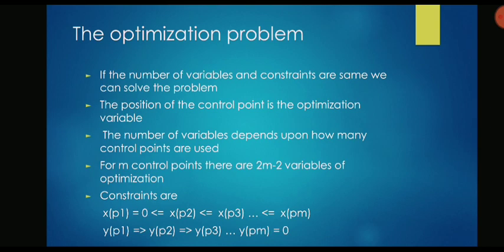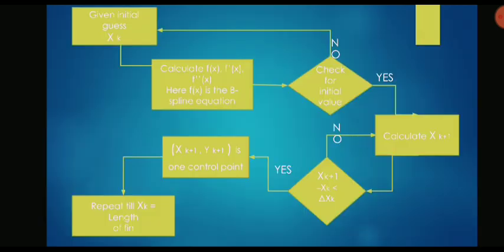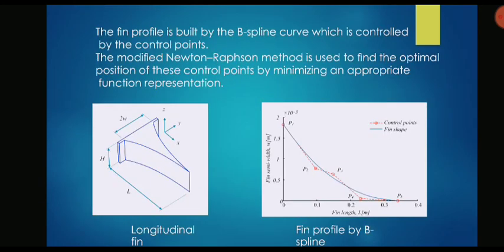This equation is going to give us a position of a control point as an output. Now we apply the Newton-Raphson method to this equation. This is where the Newton-Raphson part comes in. We assume the position of the control point and then check whether the initial guess is correct or not. We are going to go through this algorithm, this flowchart. This is basically what the Newton-Raphson method looks like.